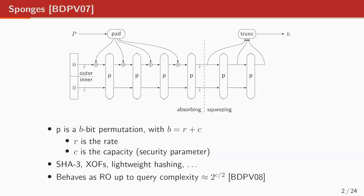We've seen a couple of times already the basic sponge. What we have is a permutation B, a B-bit permutation — think of a 1600-bit permutation — and you have a state of 1600 bits. The state is split into an inner part and an outer part: the inner part of size C, the capacity, and the outer part of size R, the rate. You then absorb messages block by block, interleaved with the permutation, and squeeze R bits at a time.